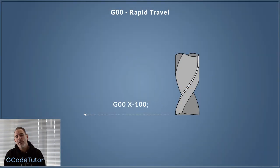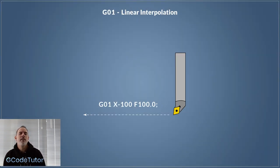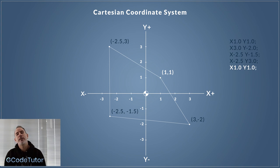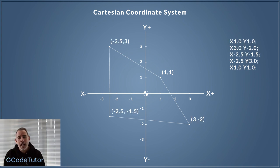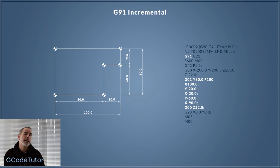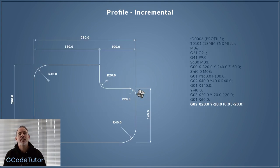The G-Code foundation course will take you through a journey from learning your first moves in G-Code using the Cartesian coordinate system, so we can position our cutter in a 3D environment. From there we start adding in extra G-Codes such as the units for whether we're cutting in metric or imperial, whether we're using absolute or incremental positioning systems, and all this is explained in great depth as the course progresses.